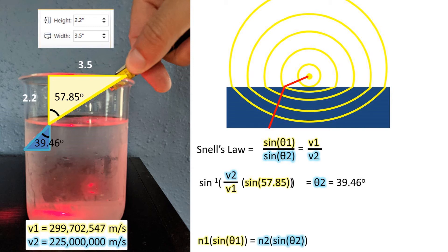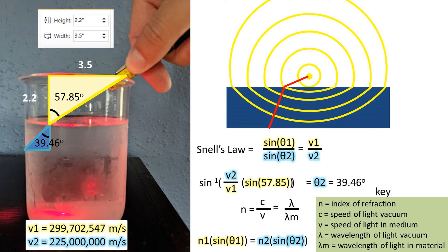There is another version of this formula that uses the index of refraction, designated with an N. The index of refraction equals the speed of light in a vacuum, divided by the speed of light in the medium in question.